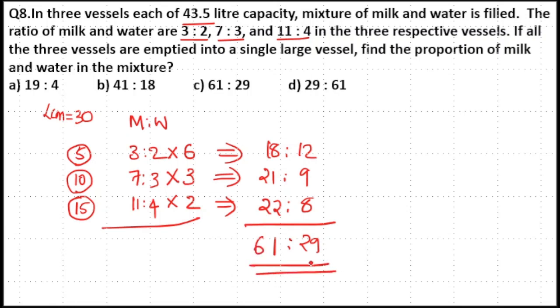So 61 is to 29 is the ratio of new mixture. So option C is your answer.